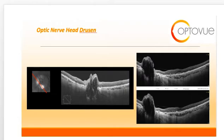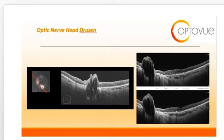Optic nerve head drusen is often mistaken for papilledema. However, it is a congenital abnormality. Optic nerve drusen are abnormal globular collections of protein and calcium which accumulate in the optic nerve. On OCT, optic nerve head drusen will appear as an elevated optic nerve head with a lumpy bumpy internal contour, which you can see here. It looks quite different in comparison to the slides on true papilledema. Optic disc drusen have also been referred to as congenitally elevated or anomalous discs.